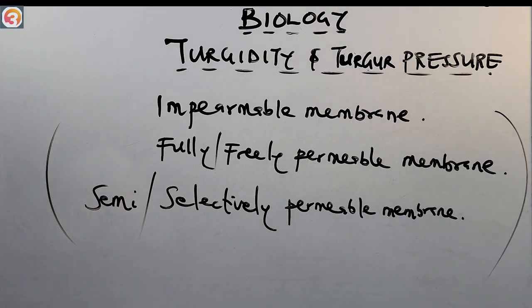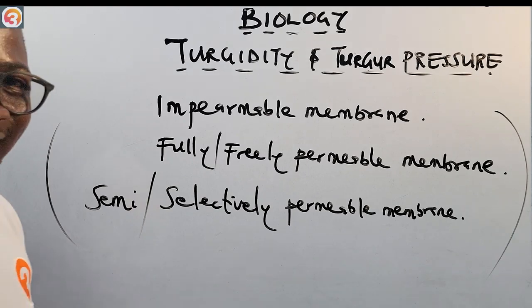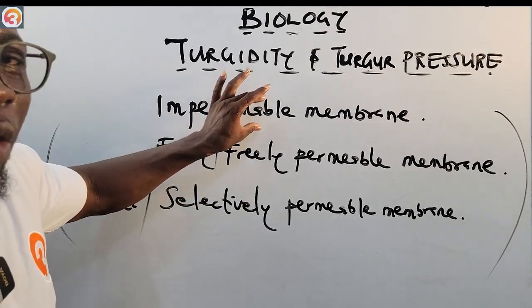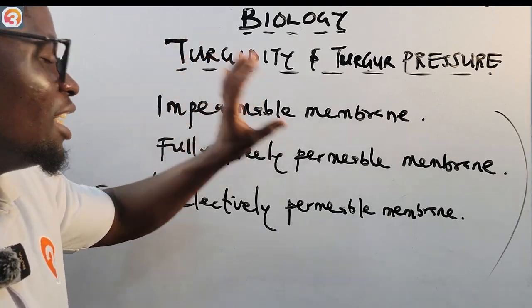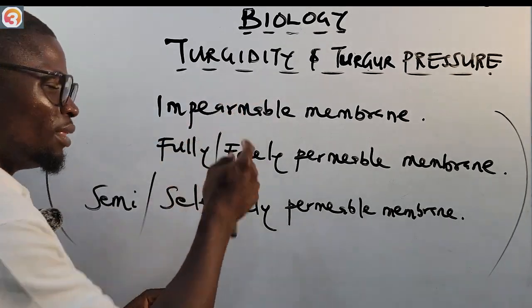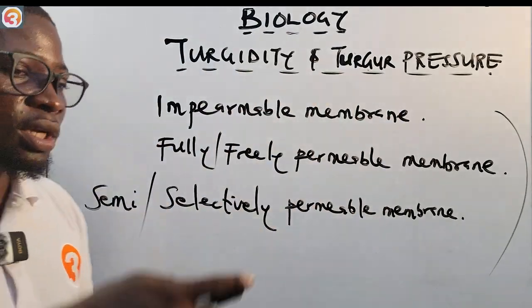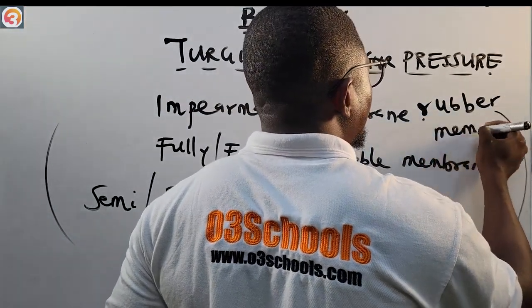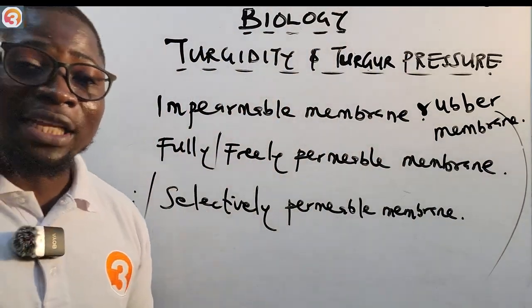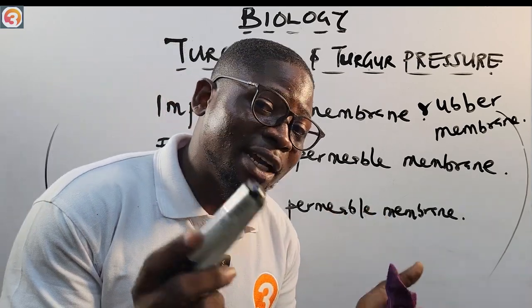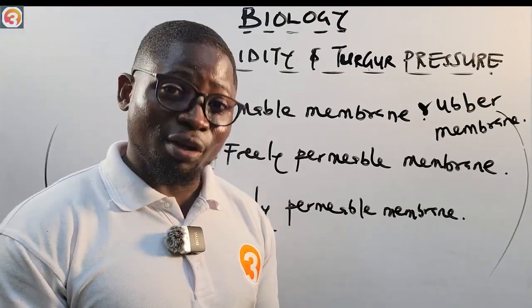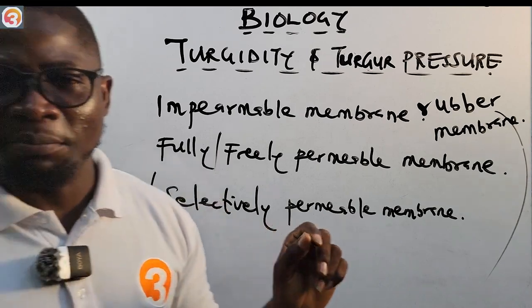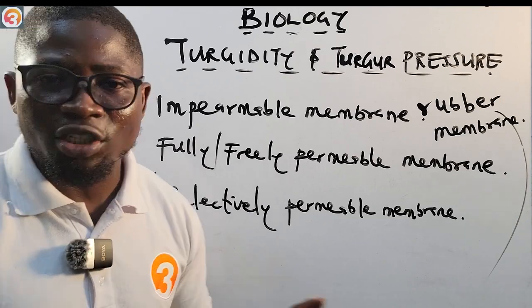Impermeable membranes are those membranes that do not allow the movement of molecules — whether solvent or solute — in or out of them. They do not allow any molecules to pass through them. An example is a rubber membrane. If you put water inside a completely sealed rubber bucket, it will not pass through to the other side.